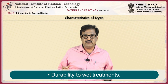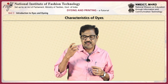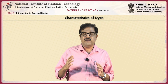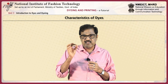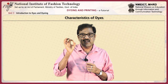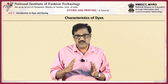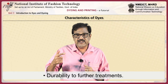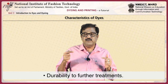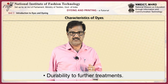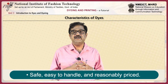Fourth, durability to wet treatments — once the dye has penetrated inside the fiber molecular structure, what kind of chemical bond takes place between the fiber and dye molecules. That means the color fastness property of the dye. If that color fastness property is strong, it produces the required durability in various wet treatment processes like washing. Fifth, the dye should be safe, easy to handle, and reasonably priced.